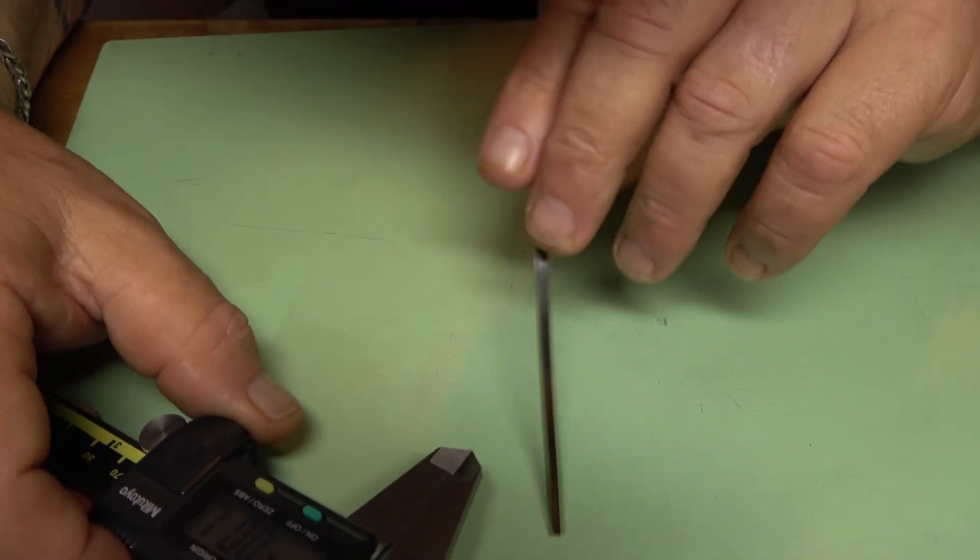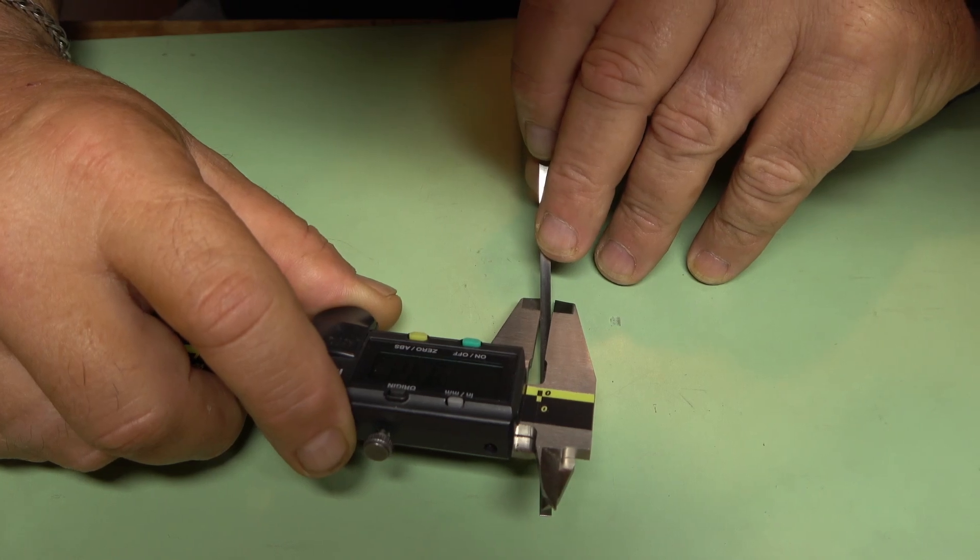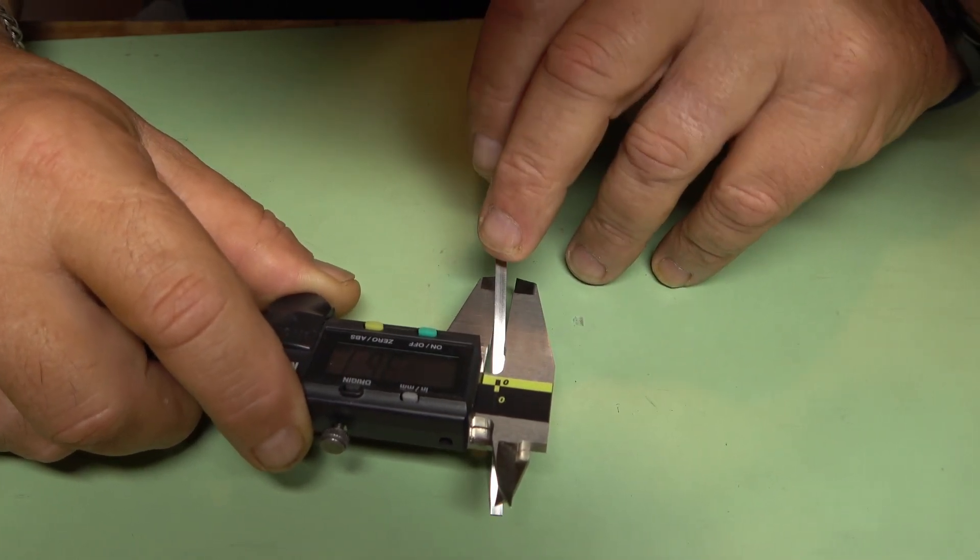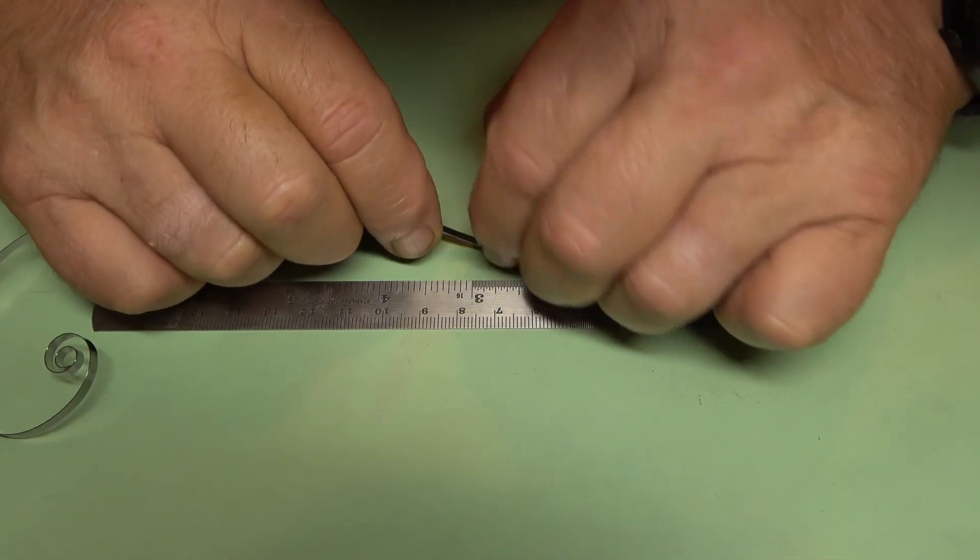To make the tool, I like to use a piece of old mainspring that's about three millimeters wide with a strength or thickness of around two-tenths of a millimeter. Then I just cut it off so it's about three centimeters in length.